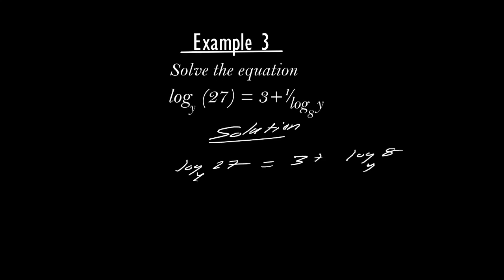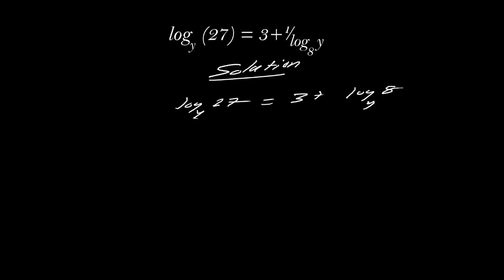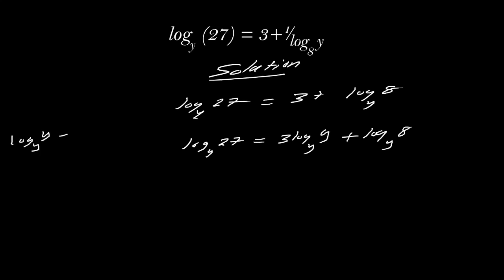To solve the equation we must have the same base. The first term is to base y, the second term 3 does not have a log, and the third term is to base y. So log 27 to base y equals 3 times log y to base y plus log 8 to base y. The logarithm of a number to the same base is 1, so log y to base y equals 1.